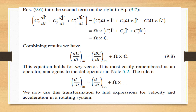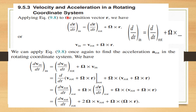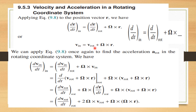We take the position vector r and apply the operator rule. d(r)/dt in the inertial frame equals d(r)/dt in the rotational frame plus omega cross r. So the velocity in the inertial frame equals the velocity in the rotational frame plus omega cross r. This is the equation relating velocities in the inertial and rotating frames.